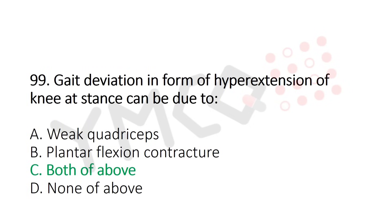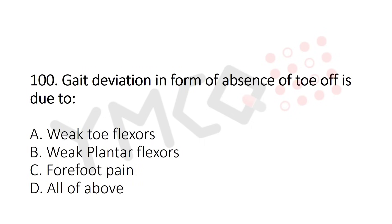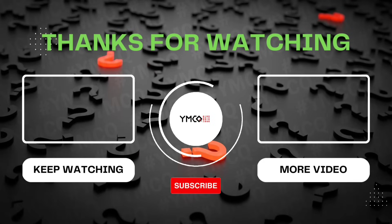Question 100: Gait deviation in the form of absence of toe off is due to — option A: weak toe flexors, option B: weak plantar flexors, option C: forefoot pain, option D: all of the above. The answer is option D: all of the above.